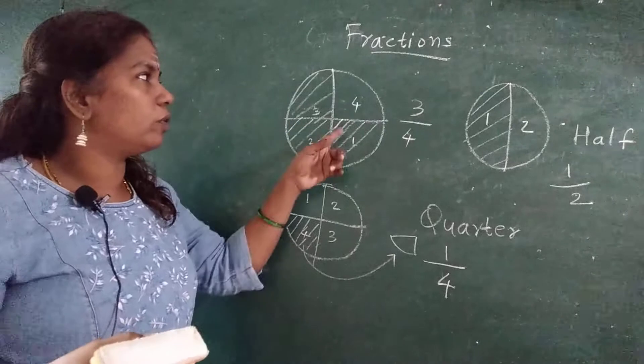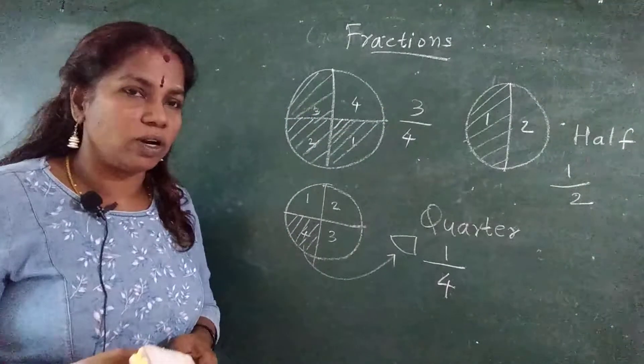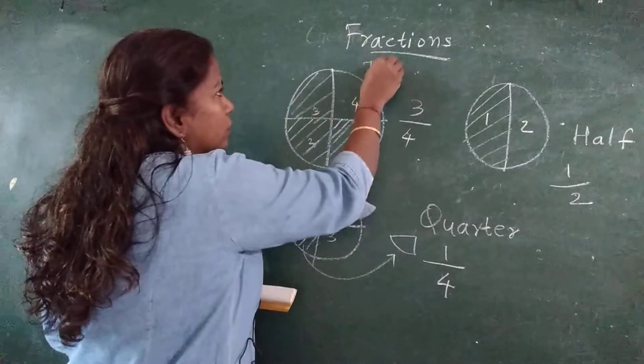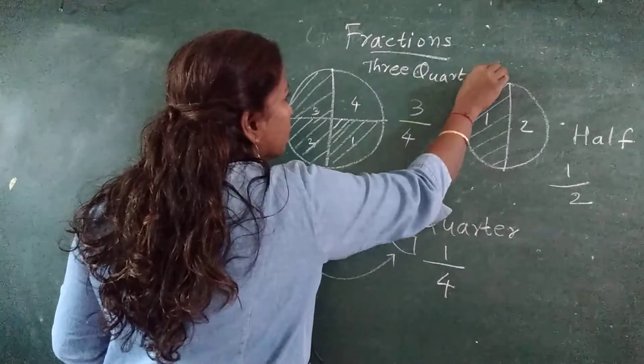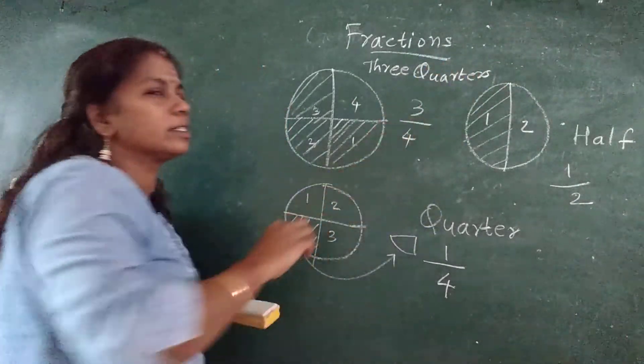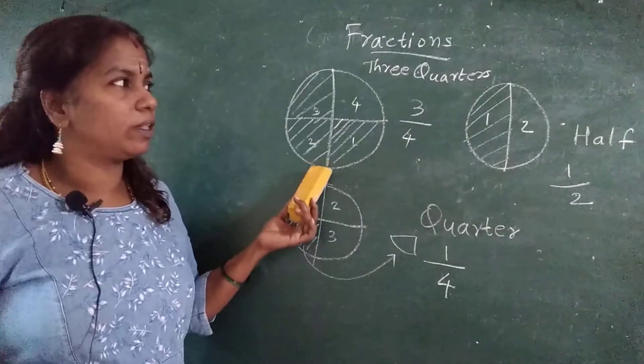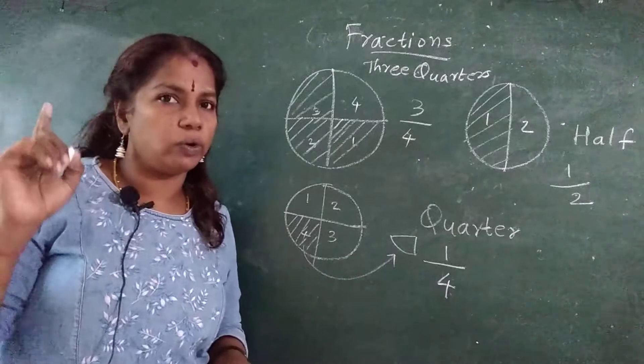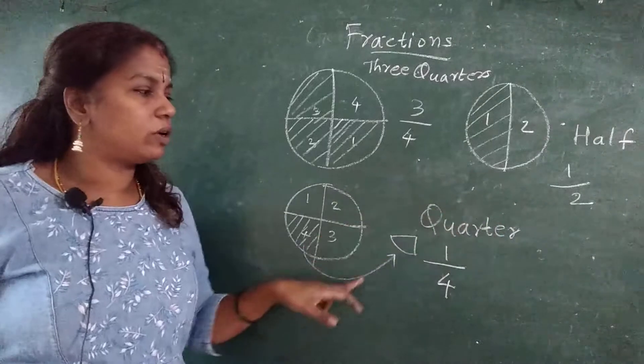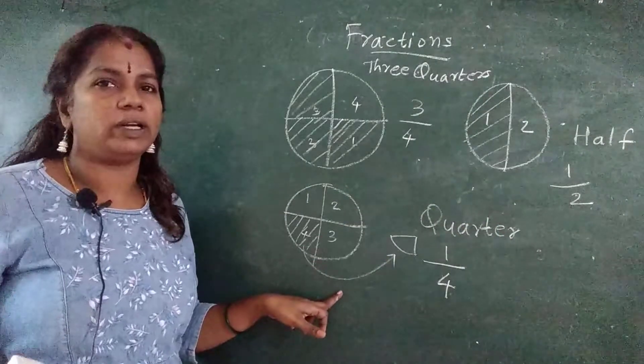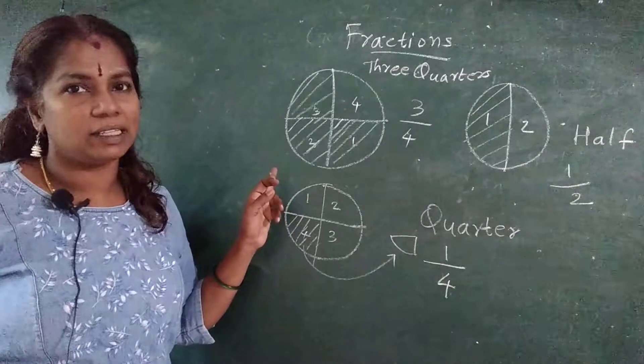Out of four, three parts I have shaded. Now what is this called as? Three quarters. Or you say as three fourths. What you call it as? Three quarters or three fourths. First what we saw? One. Second we saw half. Third we saw quarter, or you call it as one fourth. Fourth we saw three quarters, or you call as three fourths.